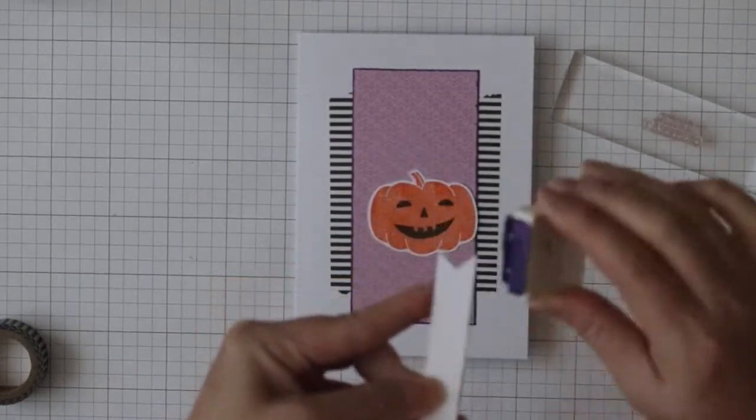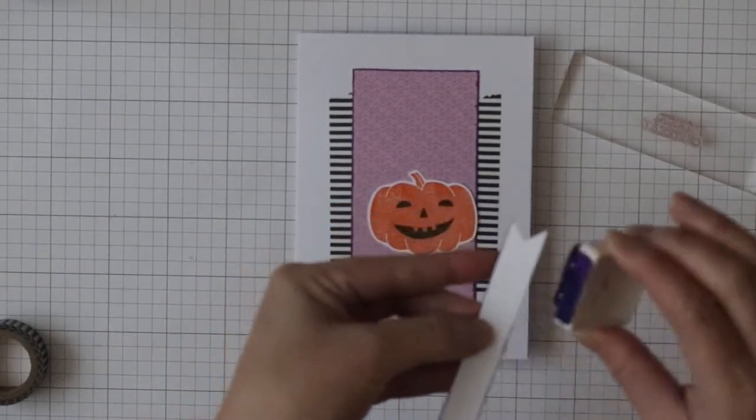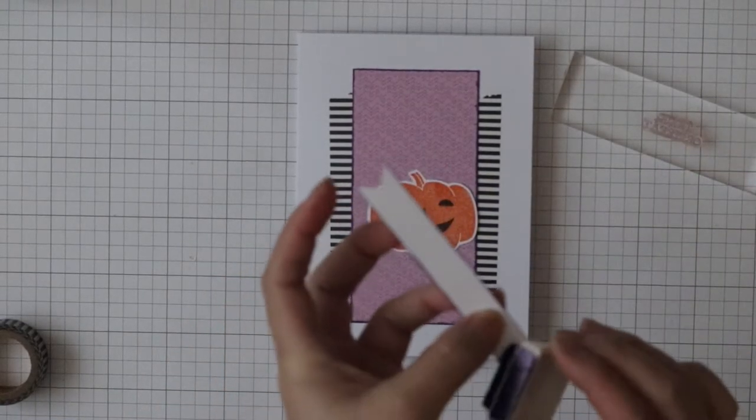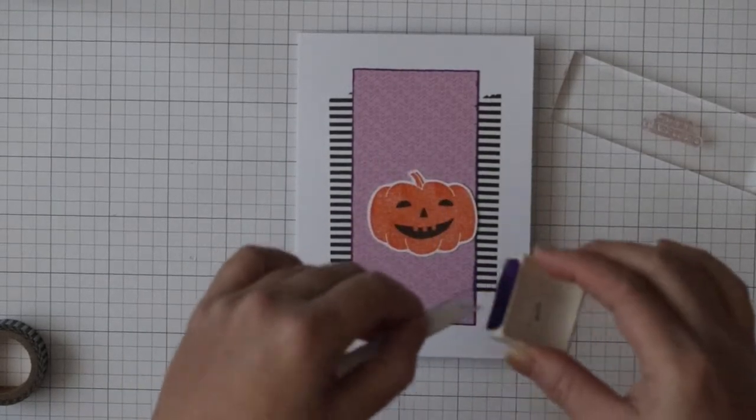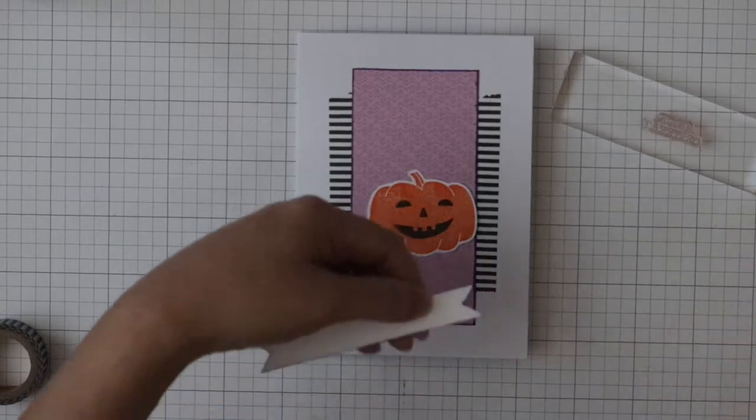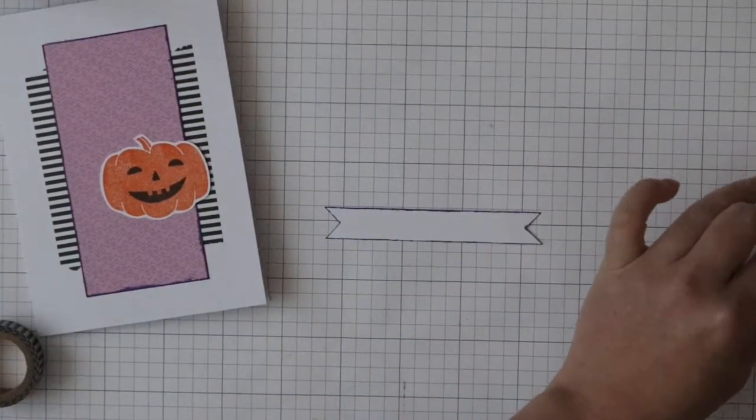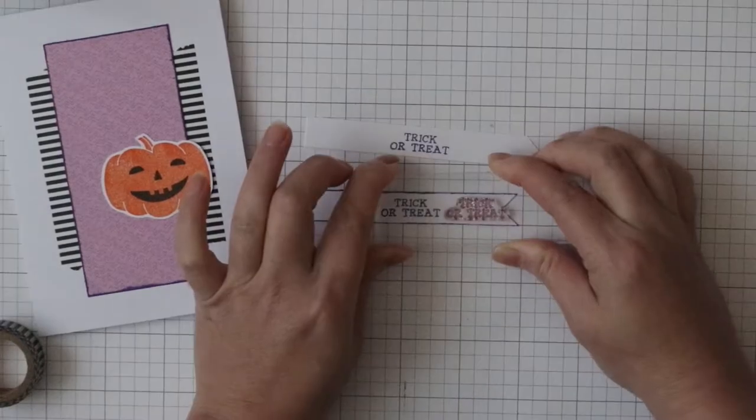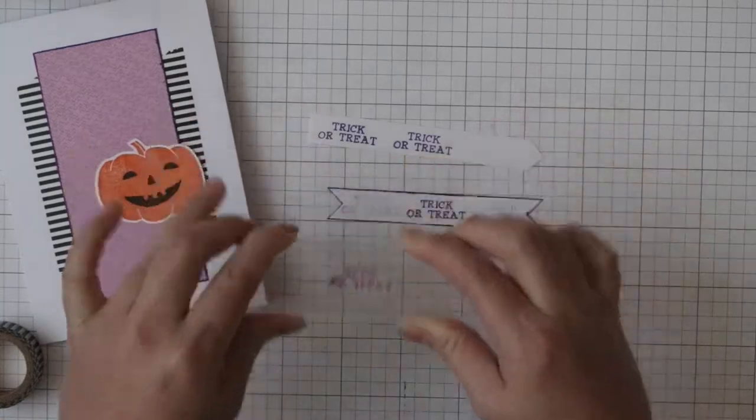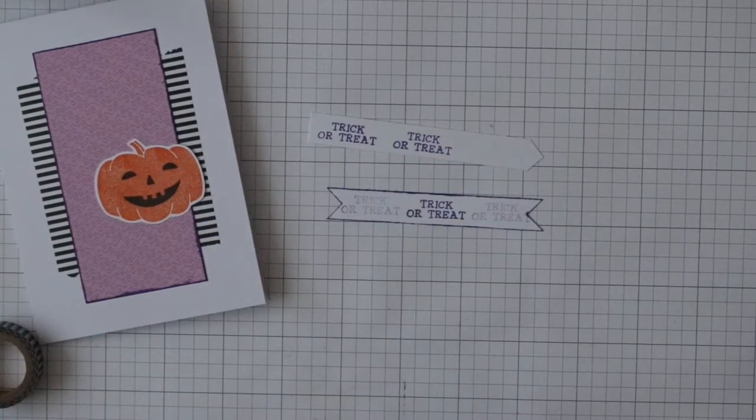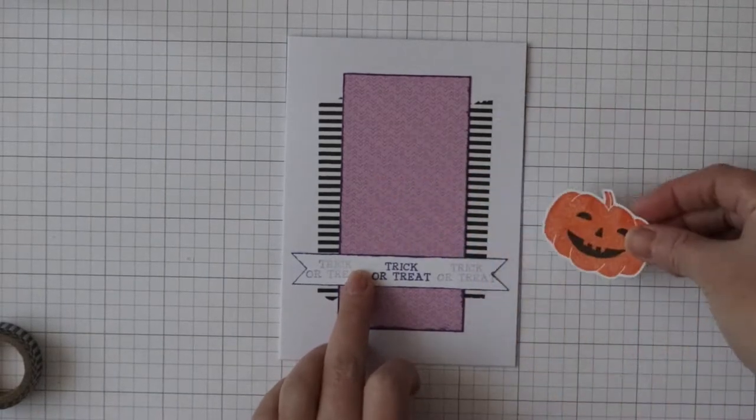Then I inked the edges with a mini ink pad. So I stamped the sentiment and I was going to stamp on the sides but decided to do generational stamping. So I stamped first on another scrap paper and then I stamped on my strip.